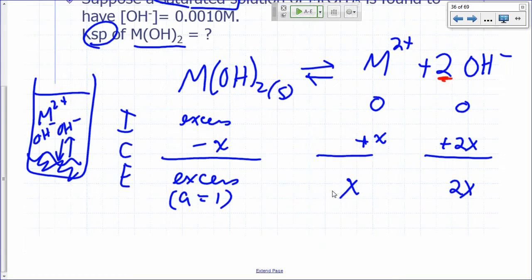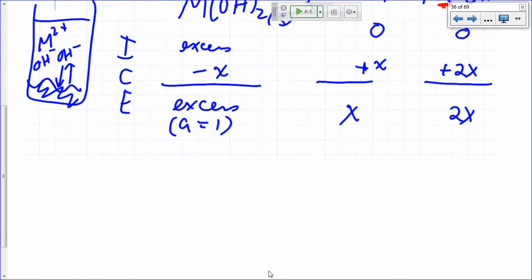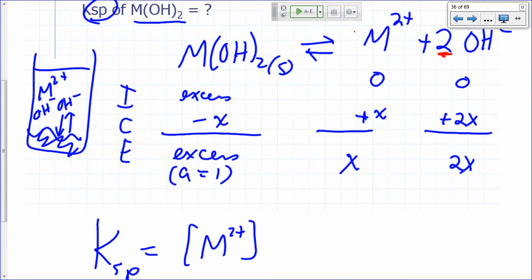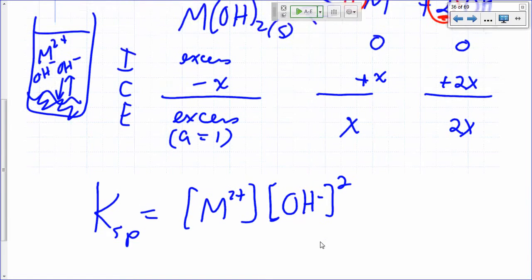So what's the KSP expression? KSP equals [M²⁺] raised to the power 1, right? Coefficient here is 1. Times [OH⁻] raised to the power 2. So that's squared. And what's the activity of the solid? It's just 1. So that's just your expression for KSP.